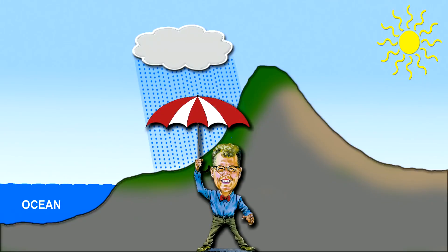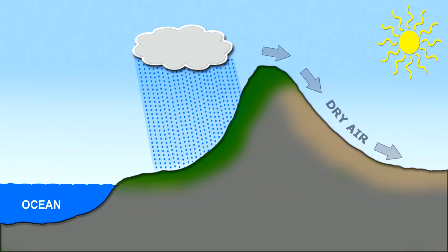The now dry air mass crosses the mountains and begins to sink on the leeward side of the range. It compresses and warms, promoting evaporation. Dry air warms one degree Celsius per 100 meters of elevation drop.